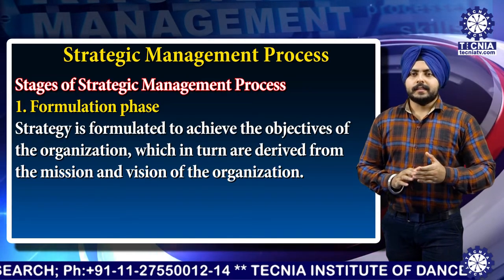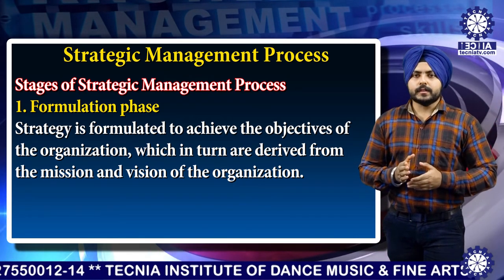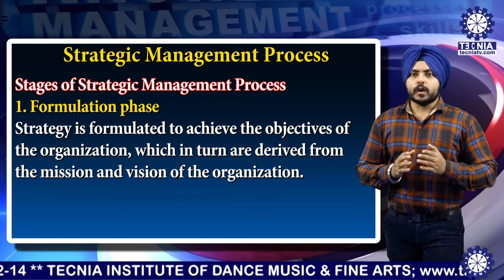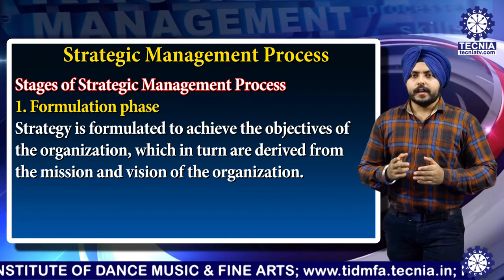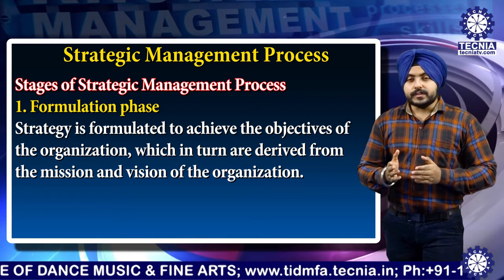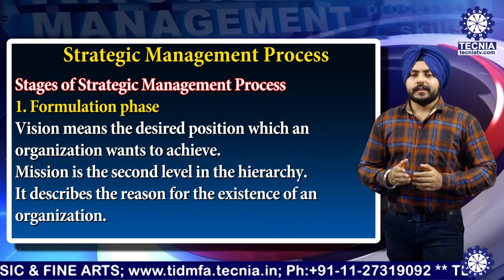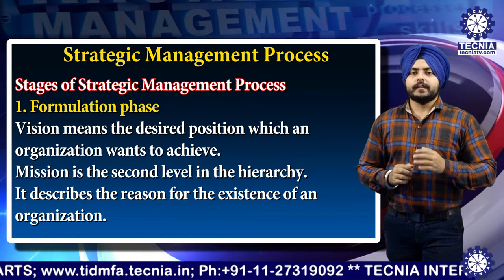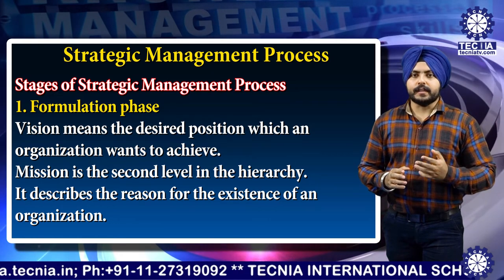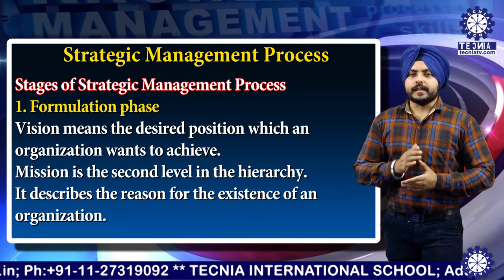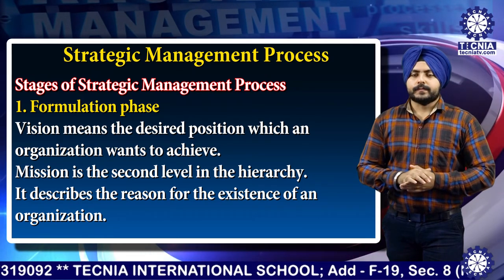Now, let's discuss the stages of strategic management process. First step is the formulation phase. Strategy is formulated to achieve the objectives of the firm, which in turn are derived from the mission and vision of the organization. Vision means the desired position which an organization wants to achieve. Mission is the second level in the hierarchy — it describes the reason for the existence of an organization.